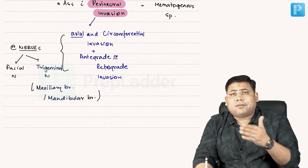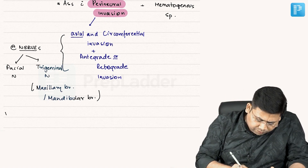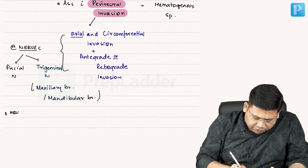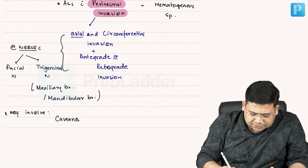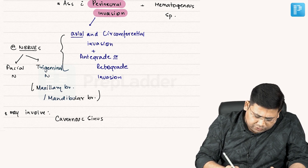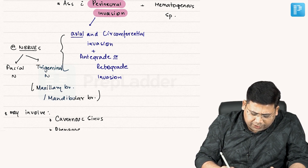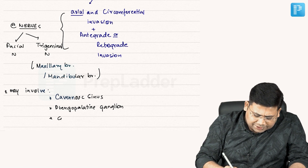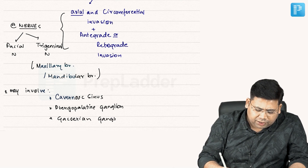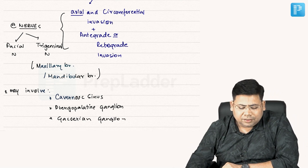This invasion involves the pterygopalatine ganglion and even the cavernous sinus. So it may involve the cavernous sinus, the pterygopalatine ganglion, and also the gasserian ganglion. This makes it very very important to note how highly aggressive this tumor is.